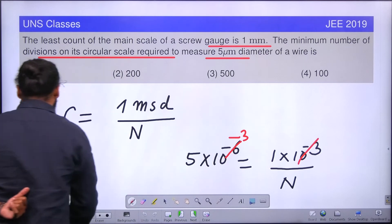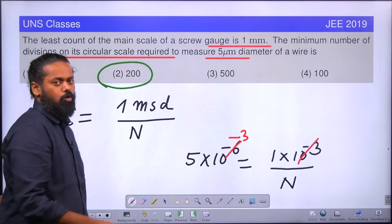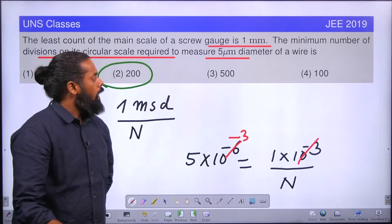So which option is matching? The correct option is second one. 200 divisions are required if you want to measure 5 micrometer.